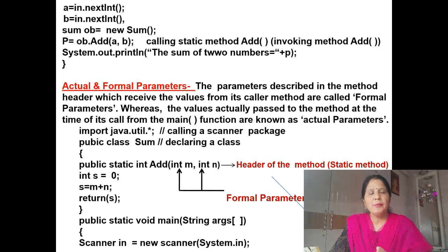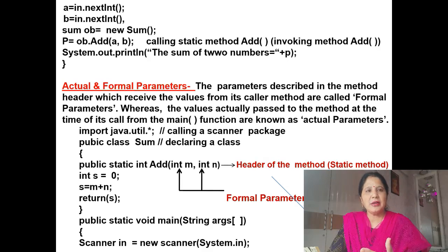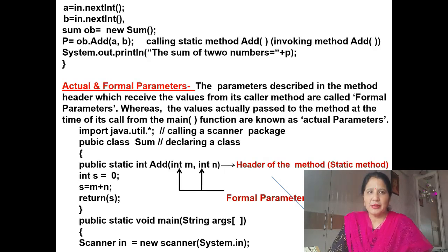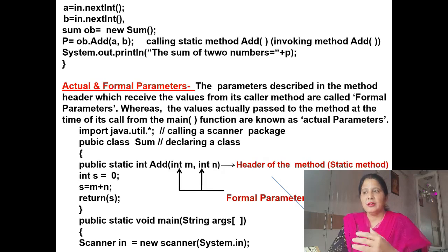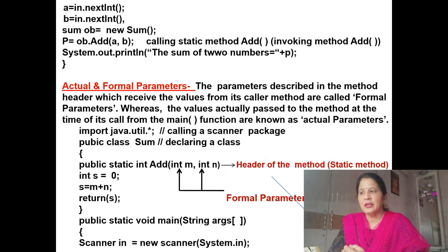This is the method calling program. In a method calling program, first we write the method we are finding, then we start the main program. Now there are two types of parameters: actual parameters and formal parameters. The parameters described in the method header which receive the values from the caller are known as formal parameters. The values actually passed to the method at the time of the call from main are known as actual parameters.